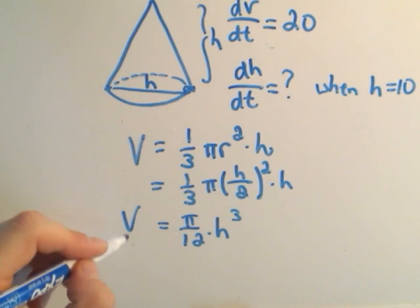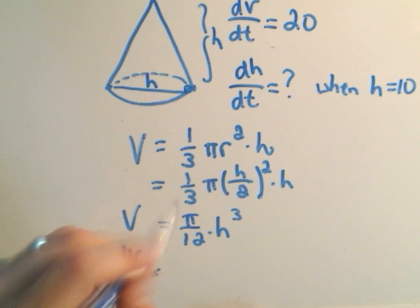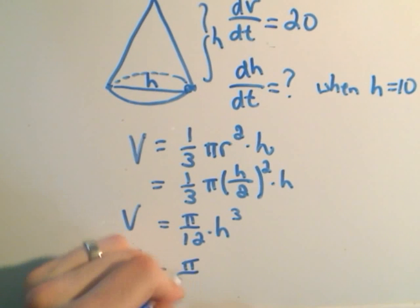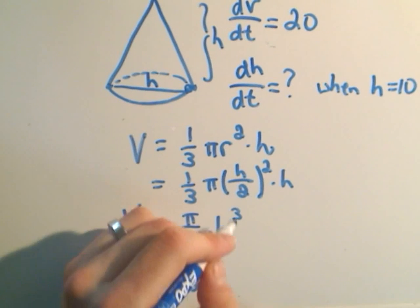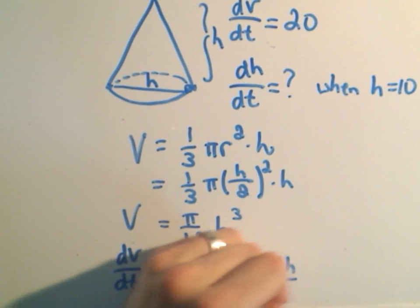If we take the derivative with respect to time, we'll get dV/dt on the left side. On the right side, the π/12 we leave alone. The derivative of H cubed will be 3H² times dH/dt.